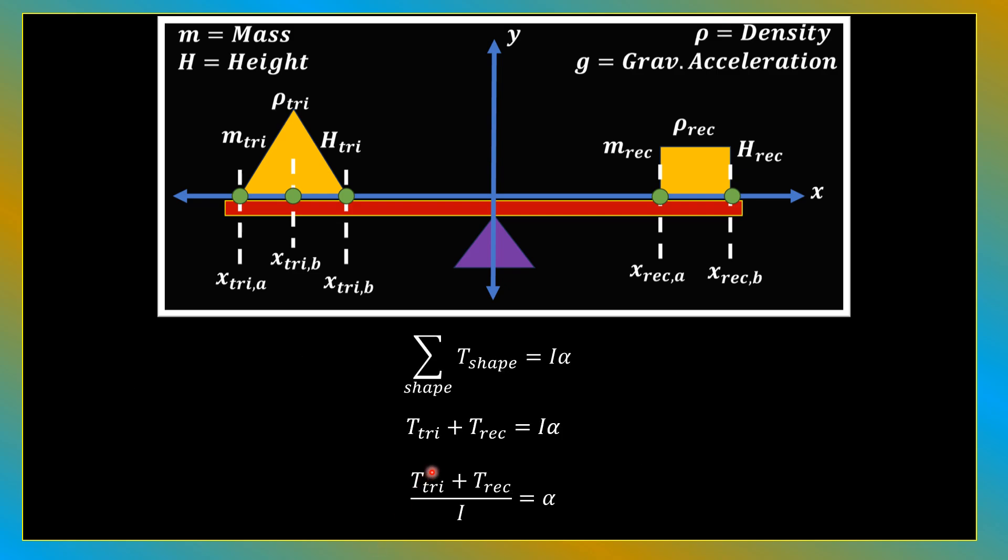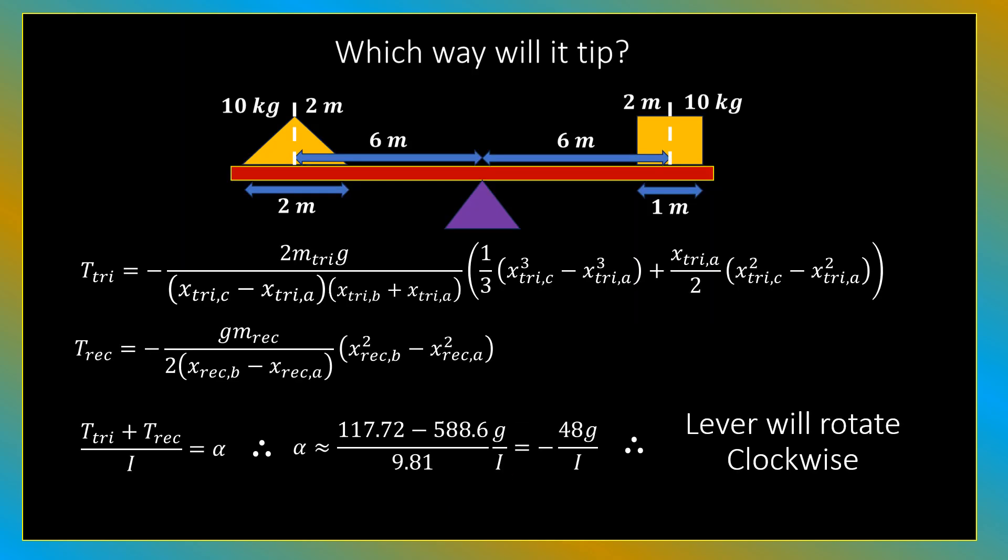So now let's go back to our original equation for angular acceleration. The sum over the shapes of T_shape is equal to i times alpha, which implies that T_tri plus T_rec equals i times alpha. Therefore, T_tri plus T_rec over i equals alpha. In other words, alpha is proportional to T_tri plus T_rec.